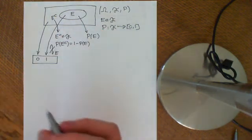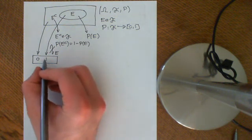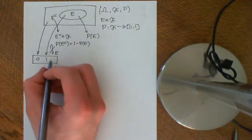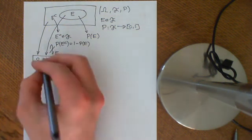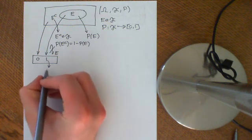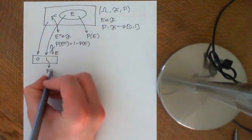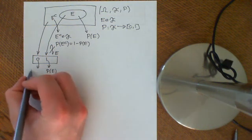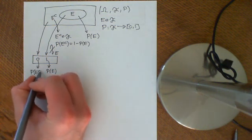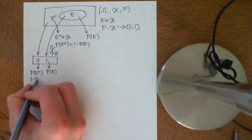And obviously on here, if we're going to make this a probability space sort of homomorphism, then the probability of 1 needs to be equal to the probability of e, and the probability of 0 needs to be the probability of e complement, which is 1 minus the probability of e.